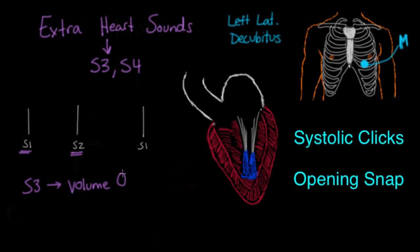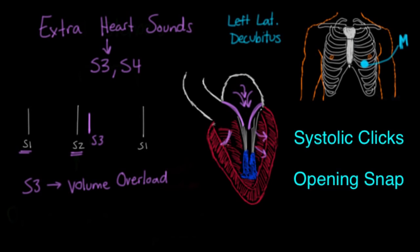S3 is classically a volume overload condition and is heard in early diastole during the rapid filling phase. If there's too much blood — too much volume — the ventricle fills up very quickly, causing a tensing of the chordae tendinae, which produces the S3 sound. In children and adolescents, an S3 can be present and is usually normal, meaning the heart is capable of accepting extra volume. But in middle-aged or elderly persons, S3 is usually a bad sign.